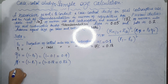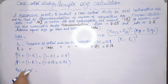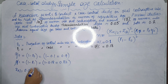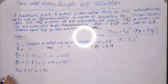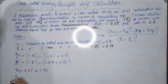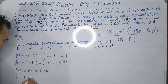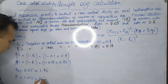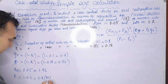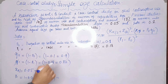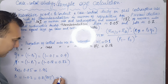For z-alpha/2, with alpha at 0.05, the z-table value is 1.96. For z-beta, with beta at 0.20 (power = 80%), the z-table value is 0.84.